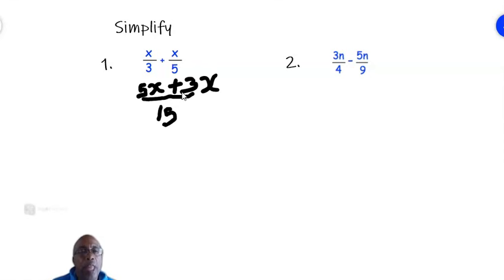And so all we do now is simplify the numerator. 5x plus 3x is 8x over 15. And that is the answer. It cannot be simplified any further. That's how we add and subtract fractions.